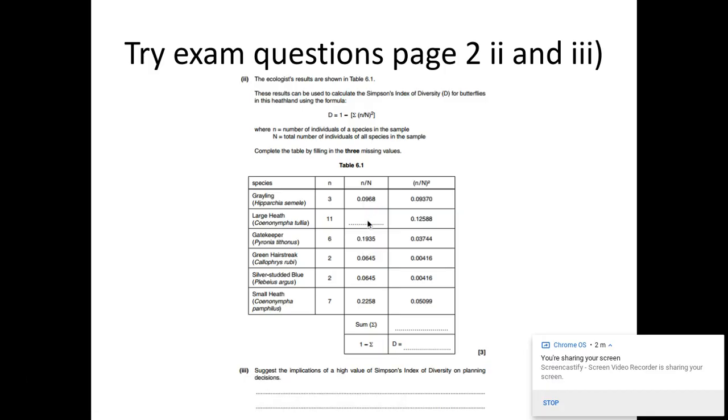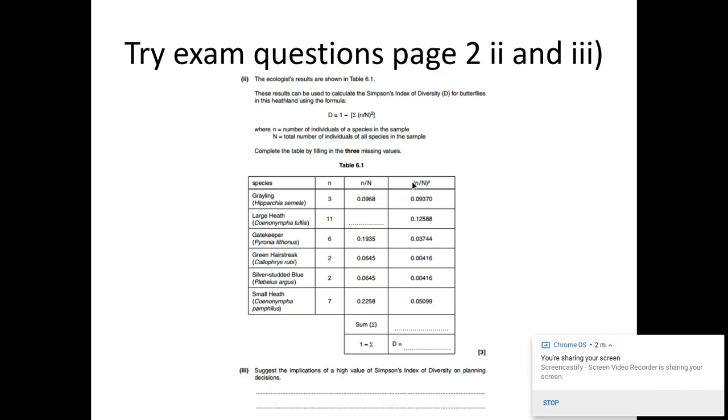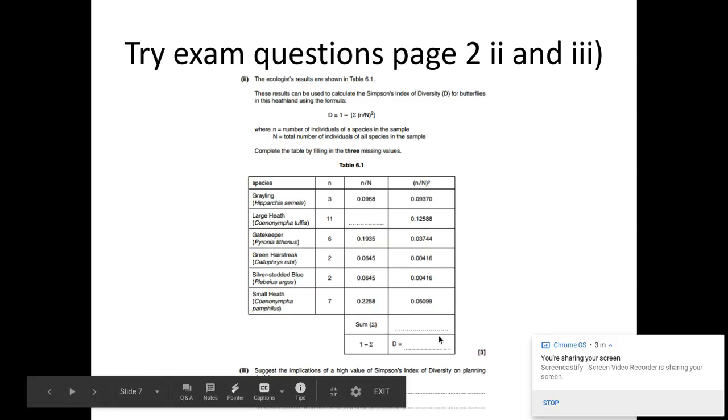Now, you need to make sure that in this column that all of these numbers are to the same decimal places. And the same with this one. You need to make sure that they're all to the same decimal places within this column. So all they've done here is literally square the number in this column. So they square it to get this number all the way down. And then the sum here, what you're going to do is just add up all of these numbers in this last column. And then the key step, which a lot of people forget, is that you're doing 1 take away this sum here to give you the overall answer.